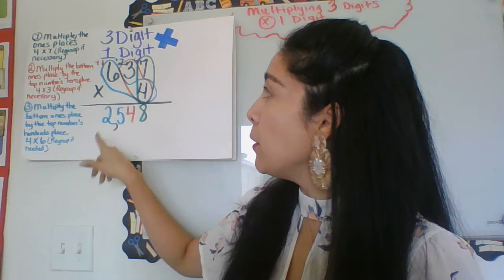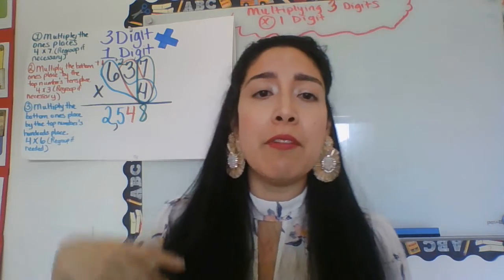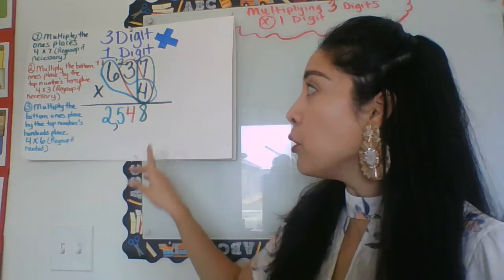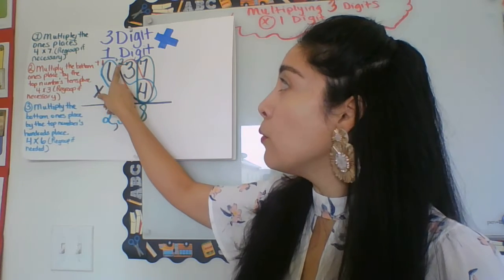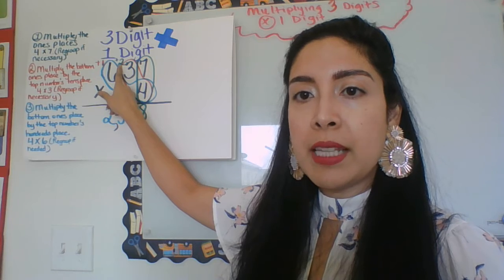So again, multiply the ones place, which is four times seven. Four times seven is 28. I'm going to have to regroup, so I drop the eight and I carry over the two to the next value over, which is where the three is at.